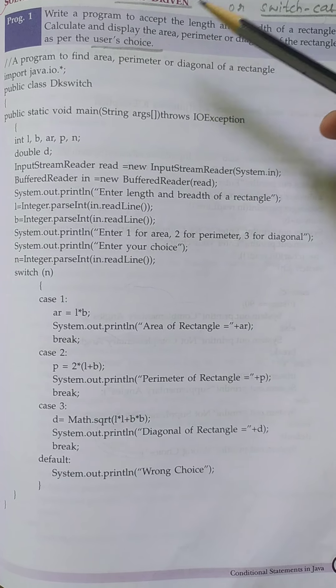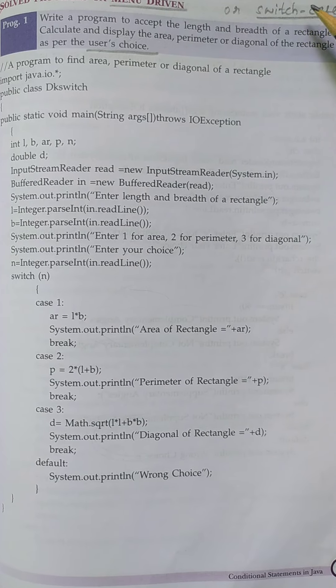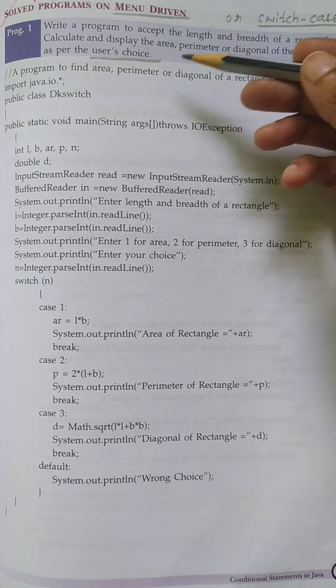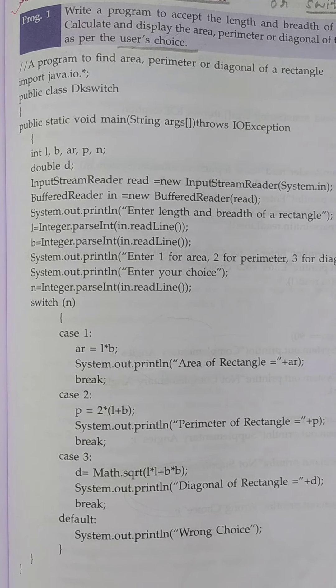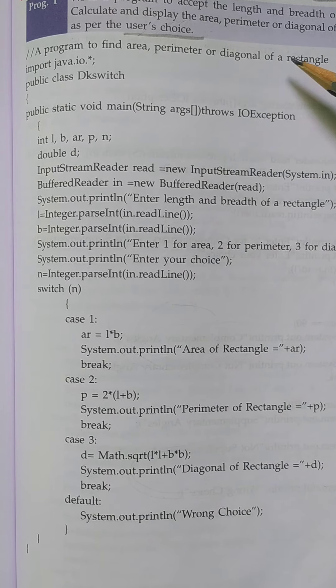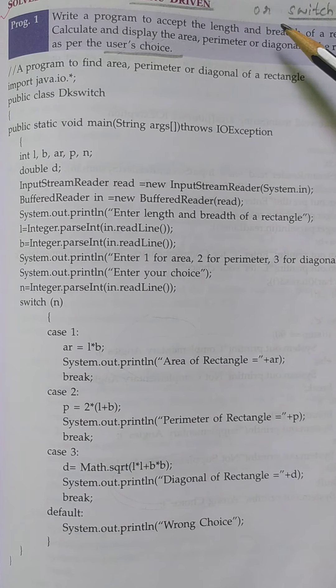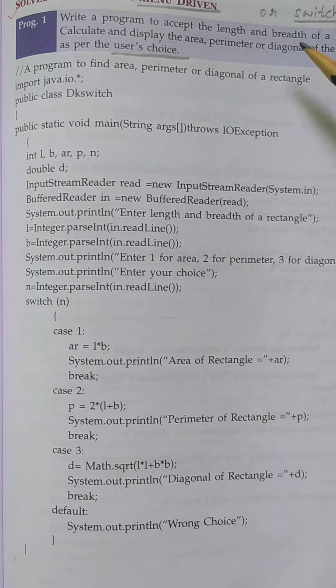That is called menu-driven or user's choice. In the question itself they will directly give 'using switch case, write the program.' So you should be able to know the formulas of area, perimeter, and diagonal of a rectangle. Write a program to accept length and breadth to find all these operations.